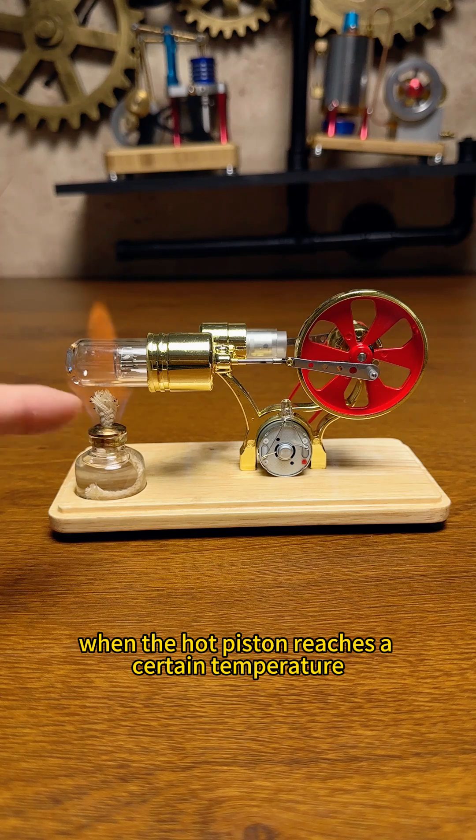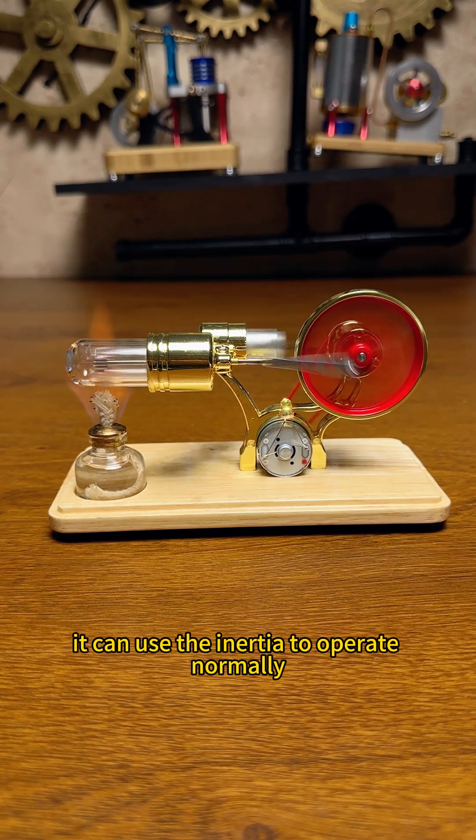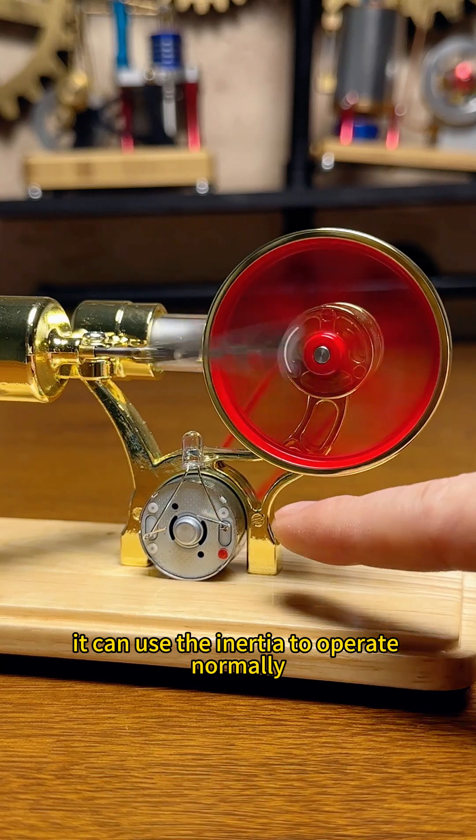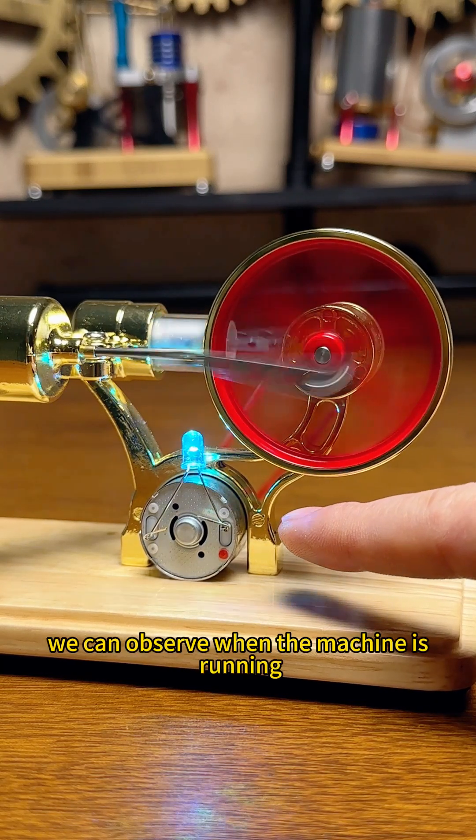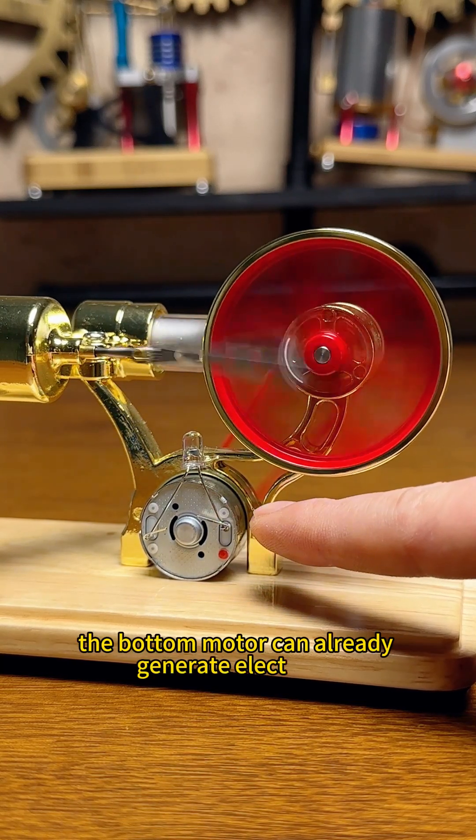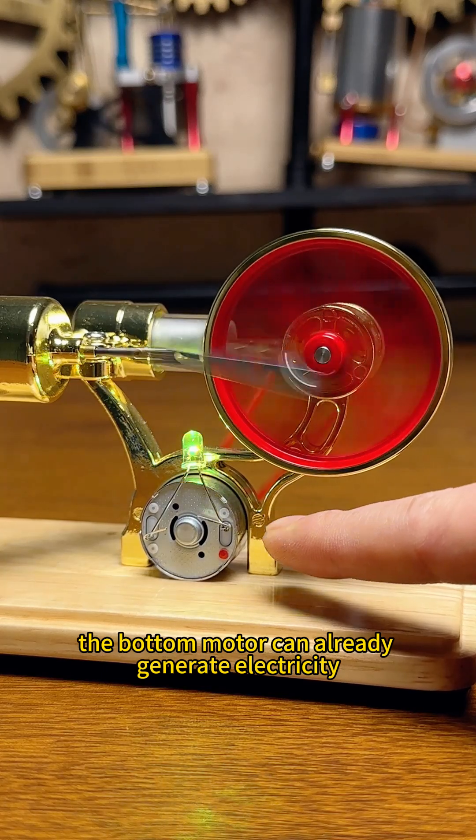When the hot piston reaches a certain temperature, it can use the inertia to operate normally. We can observe when the machine is running, the bottom motor can already generate electricity.